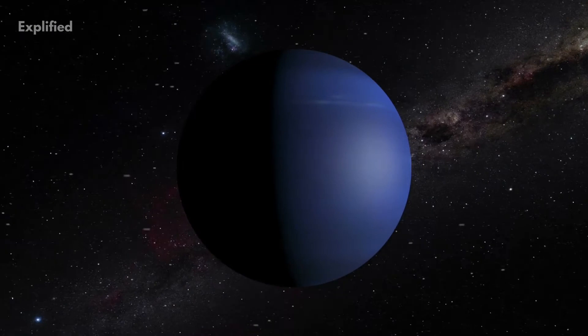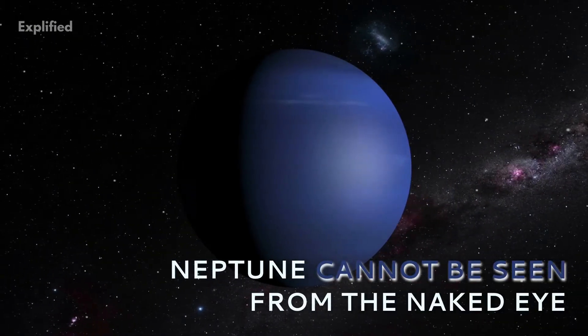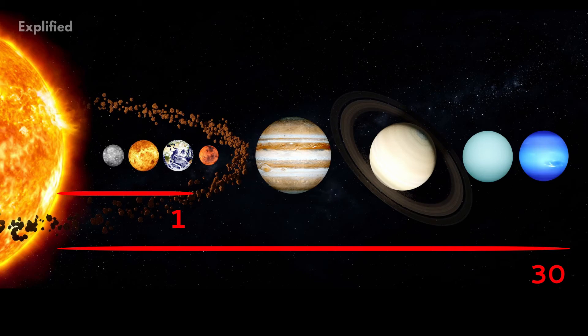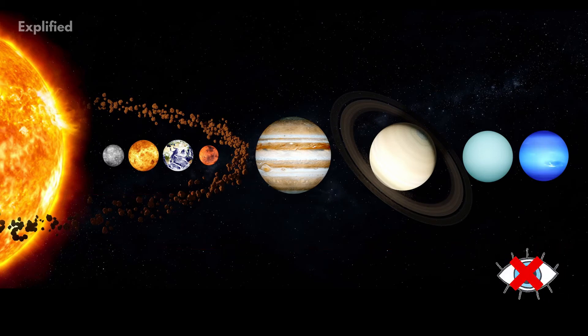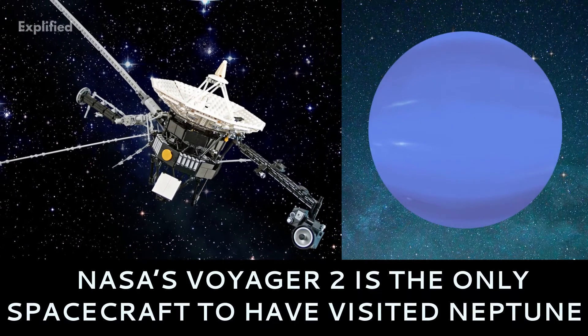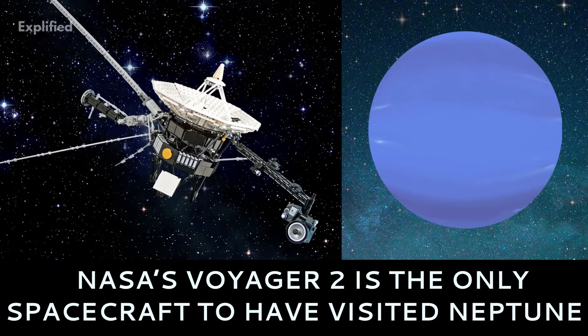Number 4. Neptune cannot be seen from the naked eye. Neptune, being 30 times farther from the Sun compared to Earth, is the only planet not visible to the naked eye. It is so far that NASA's Voyager 2 is the only spacecraft to have visited Neptune up close.